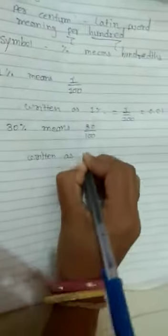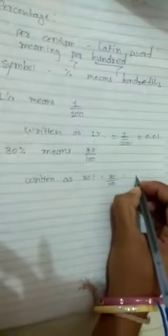...means 30 out of 100, written as 30% equals 30 out of 100 equals 0.30.